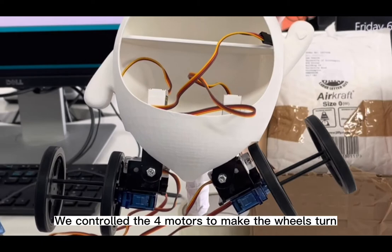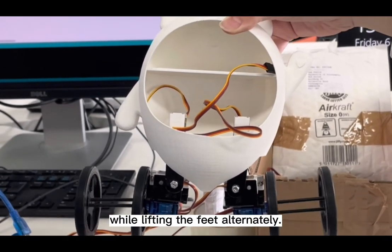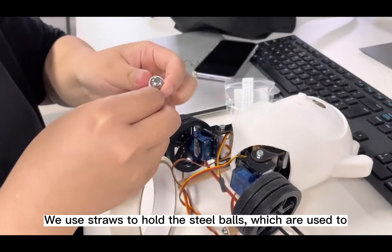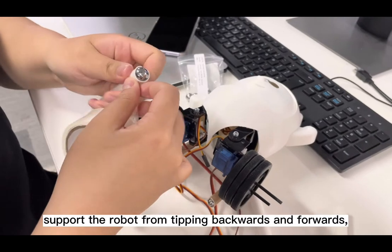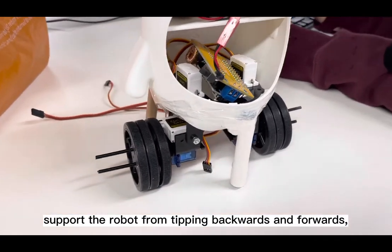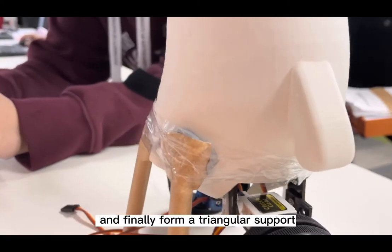We control the four motors to make the wheels turn while lifting the feet alternately. We use jaws to hold the steel balls which are used to support the robot from tipping backward and forward, and finally form a triangular support.